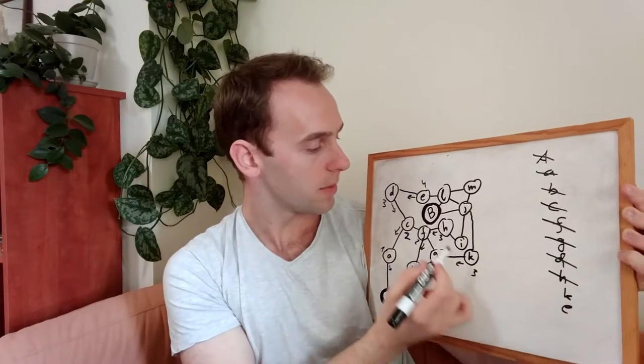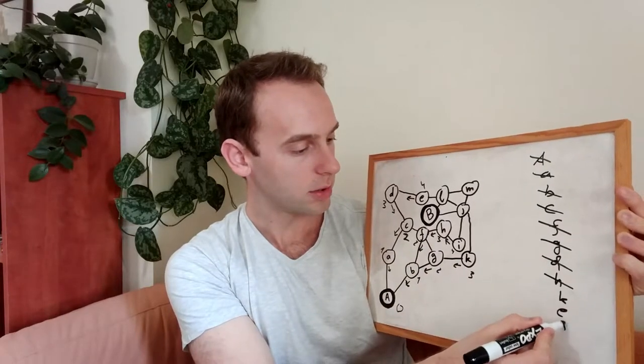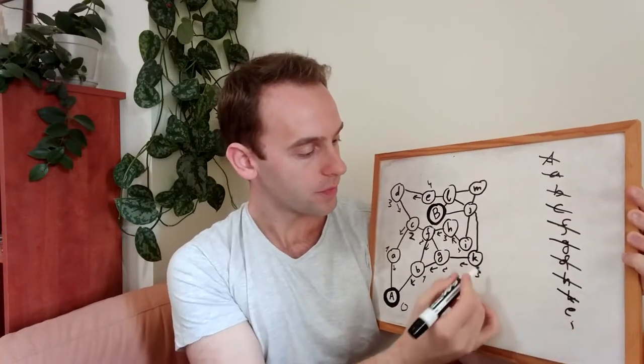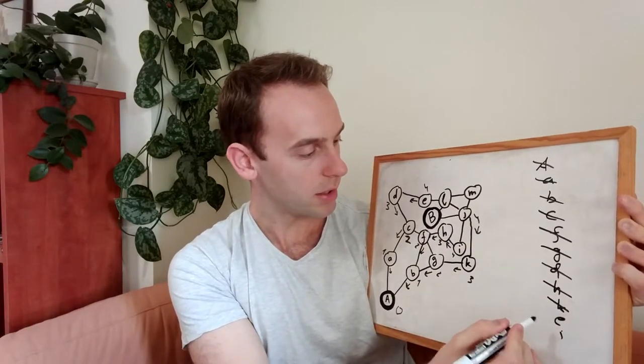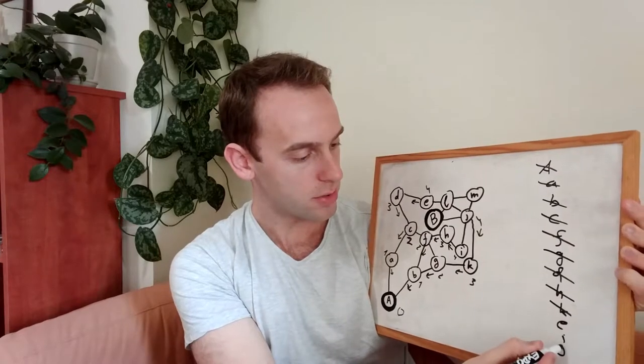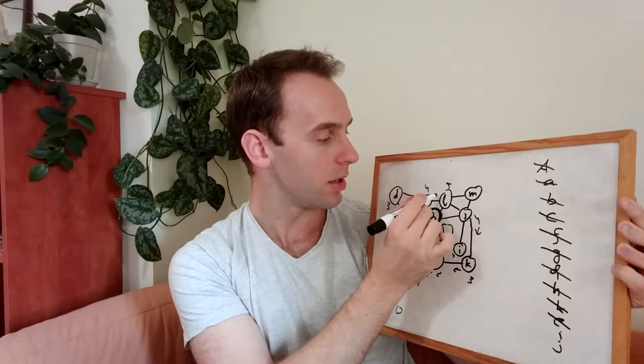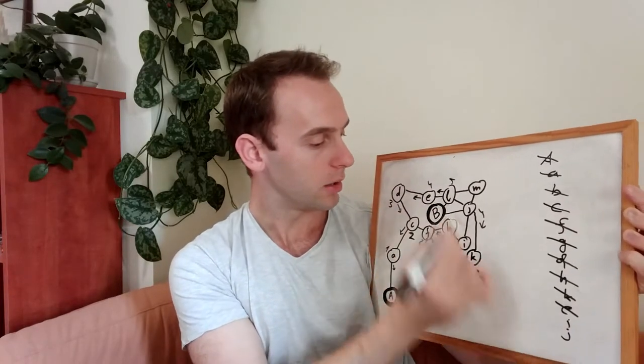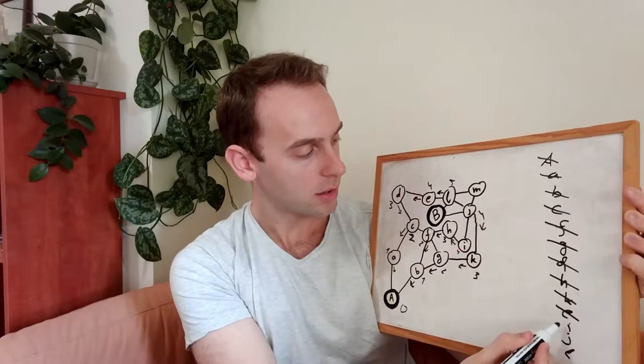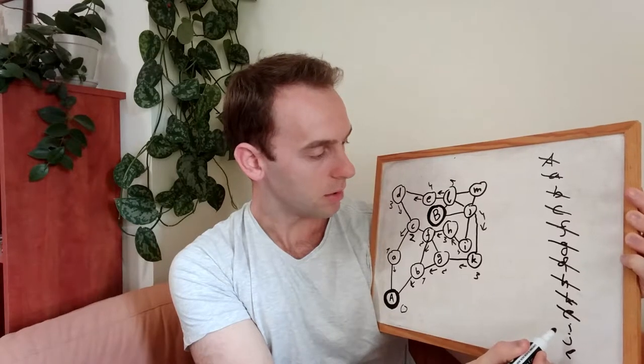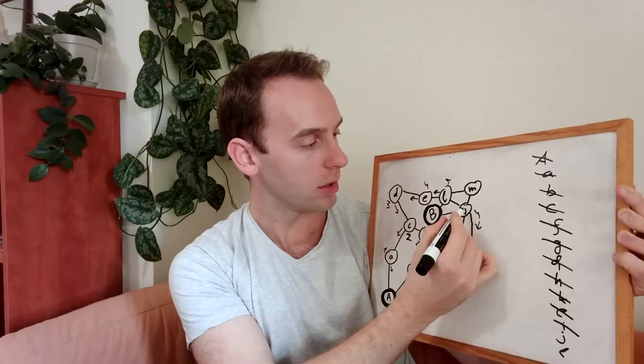Next node is H. H is three. So we will update this to be four from here. And put I here. K. Again. Four from here. And we will put J here. Next one is E. E is five here. We arrived from here. And L. The next node.